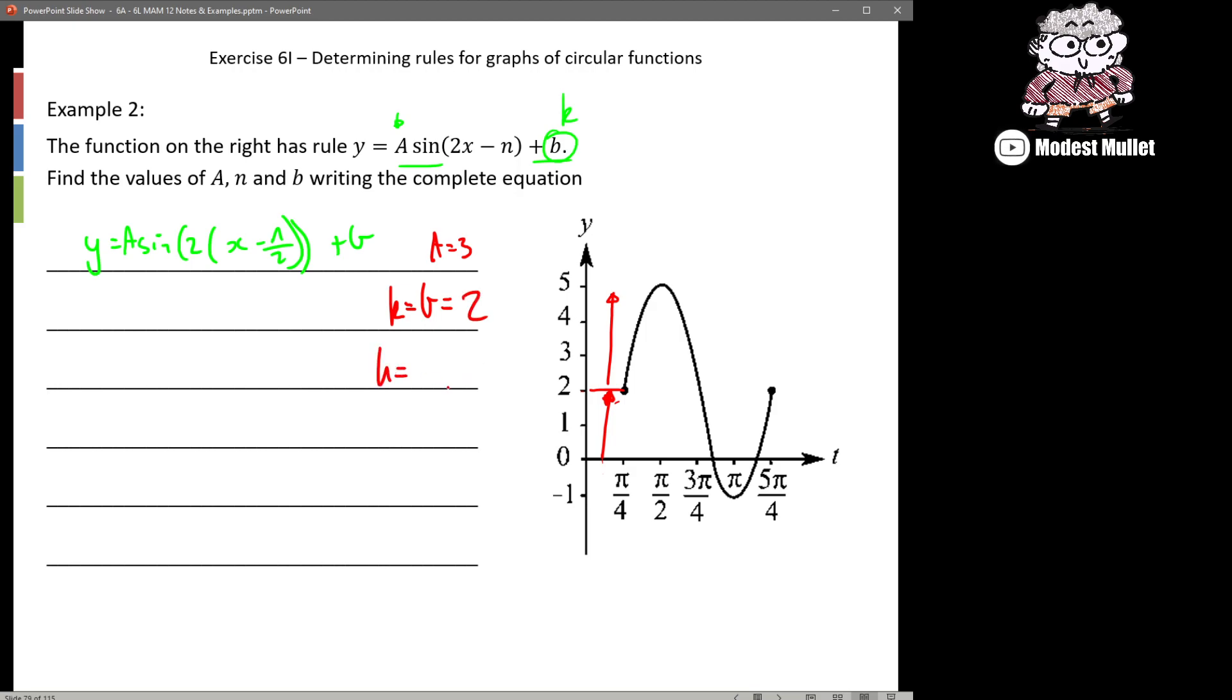And then our horizontal translation, this is k as we're used to seeing it. So it's technically our h is equal to n/2. How far has the graph been moved across? Well we can see that it's been moved across π/4.